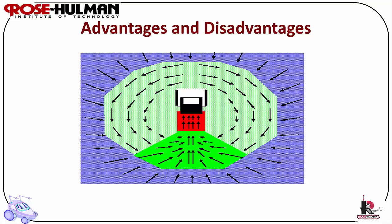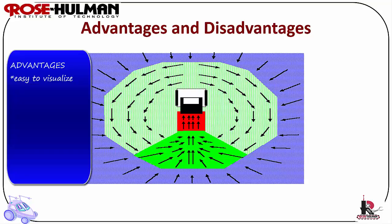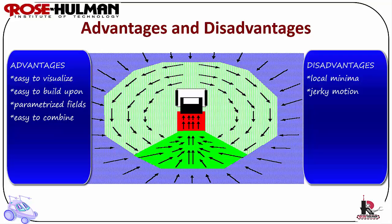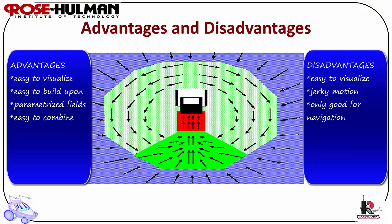What are some of the advantages and disadvantages of this method? Potential fields are very easy to visualize, it's easy to build up software libraries, fields can be parameterized, and combining mechanisms are fixed and tweaked with gains. However, some disadvantages include the local minima problem — where vectors sum to zero and the robot gets stuck — jerky motion, and this method is only good for mobile robot navigation, unlike subsumption architecture, which can be used for other types of tasks as well.